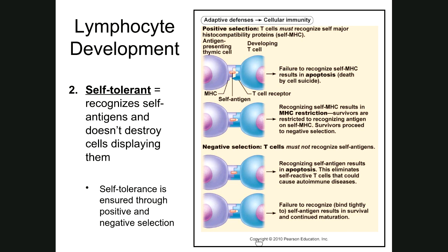Only about 2% of cells make it through positive and negative selection. Ninety-eight percent either can't recognize class I MHC — so they have no idea where to look for self — or they recognize class I MHC but also recognize the self-antigen and would react against cells displaying it. So only 2% of the cells actually make it out into the body to become functioning immune system cells.